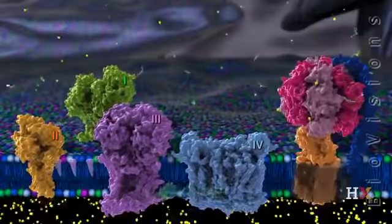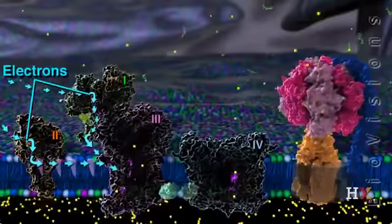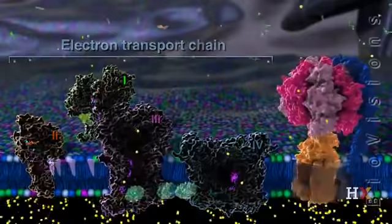Proton pumping requires energy, and the four protein complexes get this energy by transferring electrons through a series of coupled reactions. This linked process of electron transport is why the four complexes are collectively referred to as the electron transport chain.